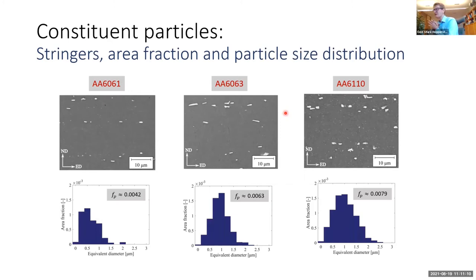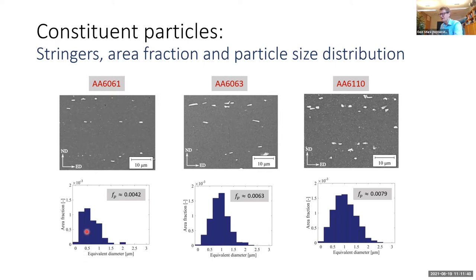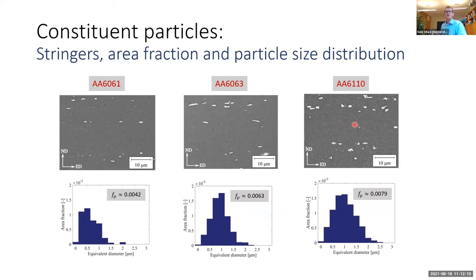The constituent particles clearly align in stringers along the extrusion direction. Area fractions span from below 0.5% up to 0.8% for 6110. The particle size distribution shows that 6061 has smaller particles while 6110 has the largest, though differences are not very large — the average size is around one micrometer, making these the important particles for ductile fracture. In the 6110 alloy, dispersoids of about 0.1–0.2 micrometers are also present to hinder recrystallization.